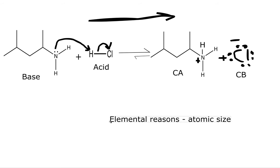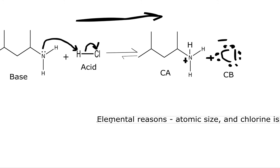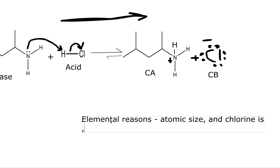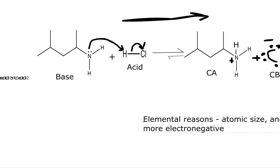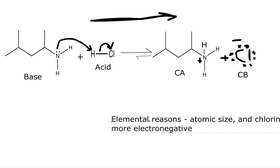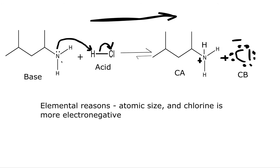The forward reaction is favored because of elemental reasons, specifically atomic size. Atomic size lets us spread out those electrons. Chlorine is more electronegative than nitrogen, and it is also larger in atomic size, which lets us spread out those electrons more effectively. So we compared our base to our conjugate base: chlorine likes to have electrons on it because it's more electronegative and larger than nitrogen. That is why our products are favored in this case — so that would be your answer for this problem.